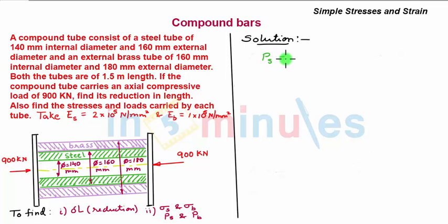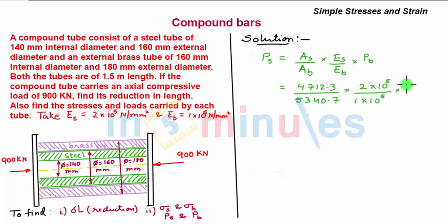We can write PS equals AS over AB times ES over EB times PB. Substituting the values, I get 4712.3 over 5340.7 multiplied by 2 times 10 to the power 5 over 1 times 10 to the power 5 times PB.